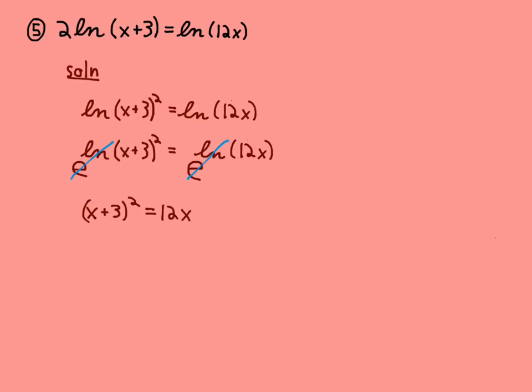So I need to multiply out the left side, combine the like terms. So I get x squared plus 6x plus 9 equals 12x. Subtract the 12x on the left.